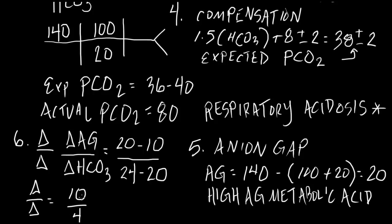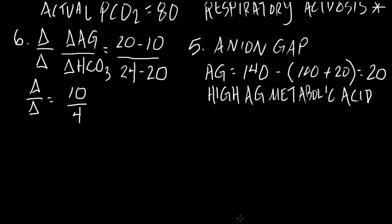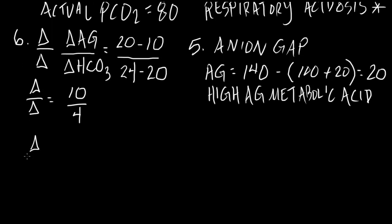Remember, our normal range of our delta-delta should be between 1 and 2. So, for every increase in anion gap, we should have a decrease in bicarb, approximately 1 to 1. In our case, we have 10 divided by 4, and 10 divided by 4 is greater than 2. It's 2.5.